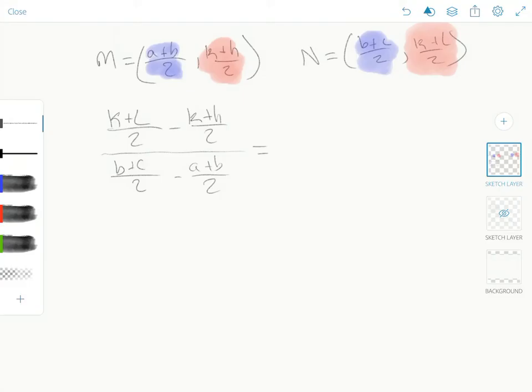So the first thing we're going to do is get rid of the complex nature of the fraction. You see how each of those expressions is being divided by 2, K plus L over 2, K plus H over 2, B plus C over 2, A plus B over 2. All of those are being divided by 2, so that means we can factor out one half and cancel it away. So the numerator is the same as one half times K plus L minus the quantity K plus H divided by the denominator, where we factor out the one half as well, and that will be one half times B plus C minus the quantity A plus B. We have to keep this as a quantity because this minus sign is acting on both of the characters in the numerator.